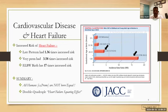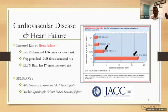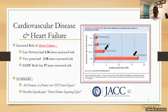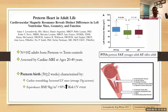This elegant graph shows that the x-axis is the incidence of heart failure and the y-axis is gestational age at birth. If 1 is the reference for term, extreme preterm is 17 — meaning a 17 times higher risk of cardiac failure if you're born ELBW. It's dose-response: late preterm is about 1.5 times, very preterm is about 4 times. All preterms are not born equal, and this squaring effect is something we need to remember, at least in ELBW counseling.